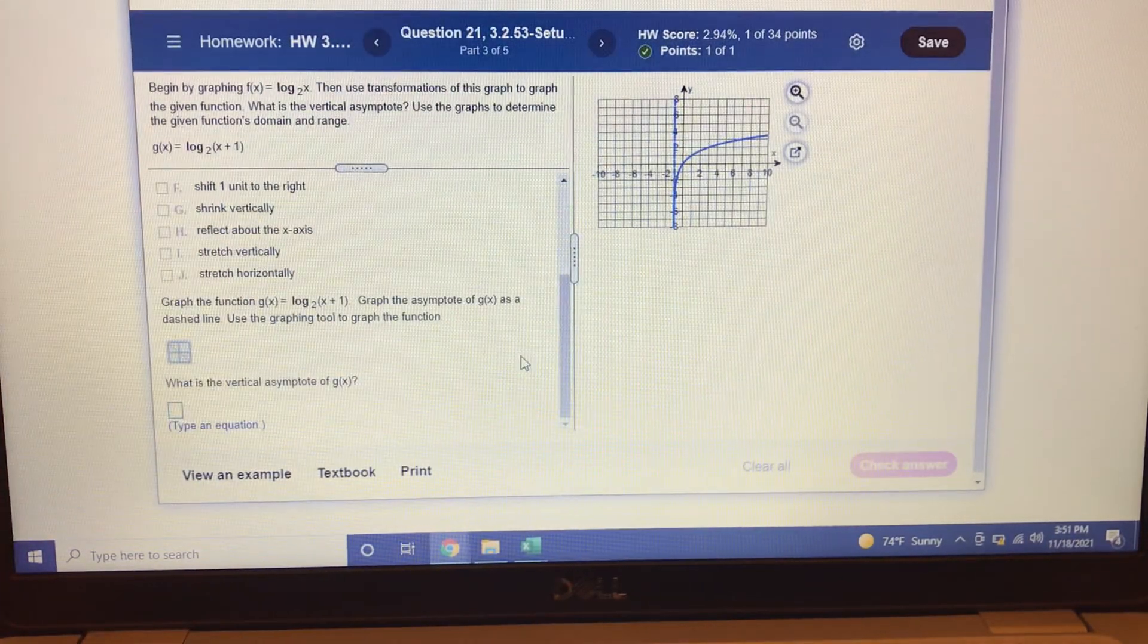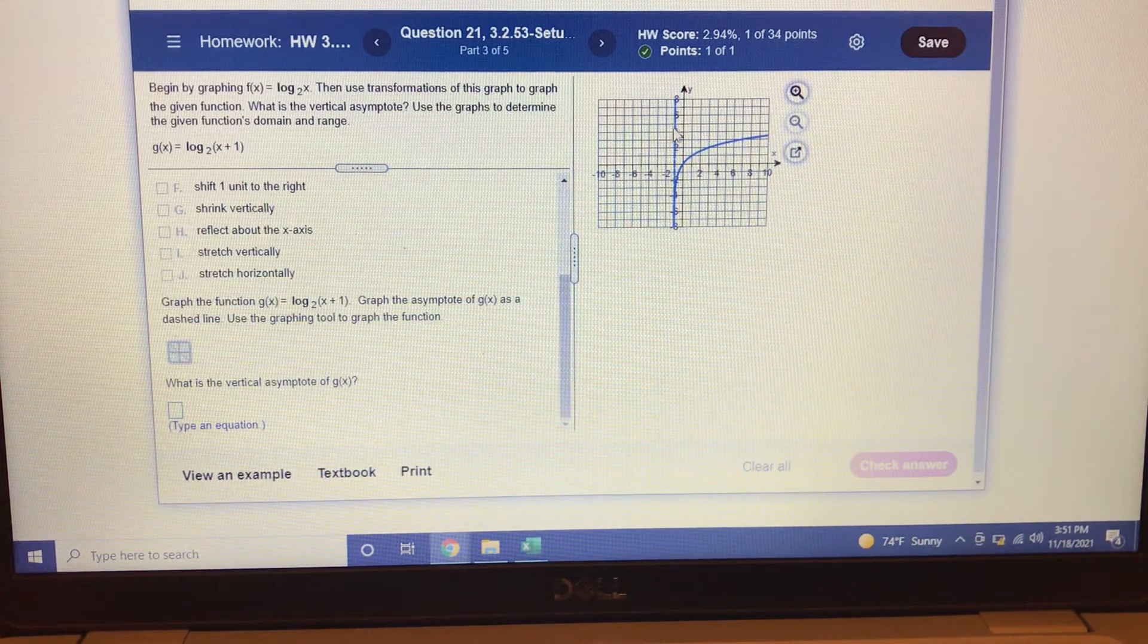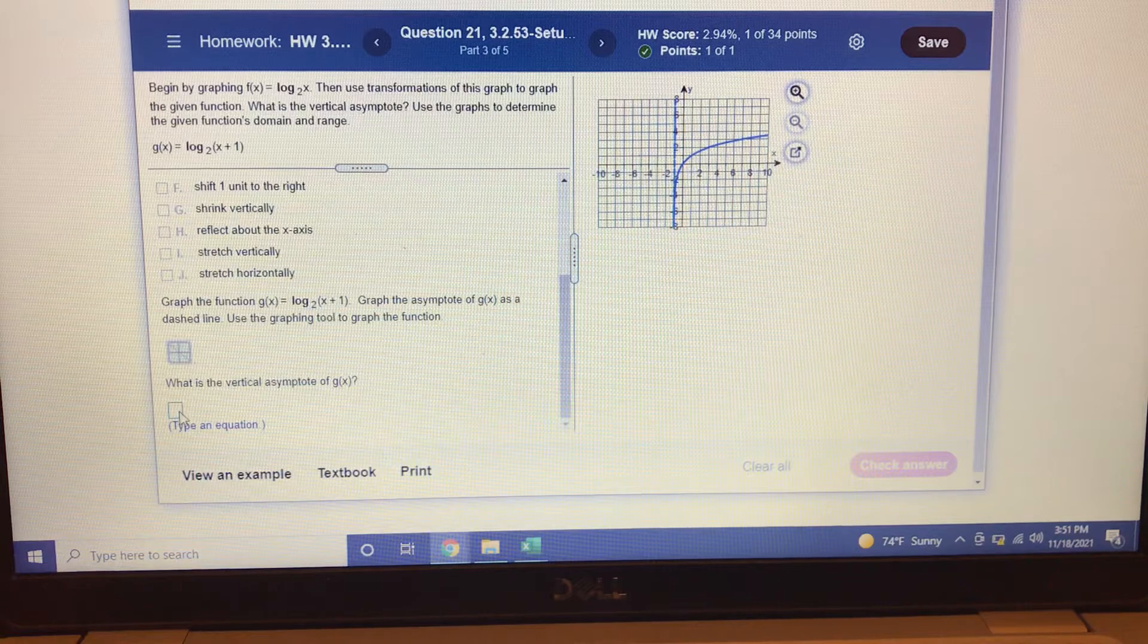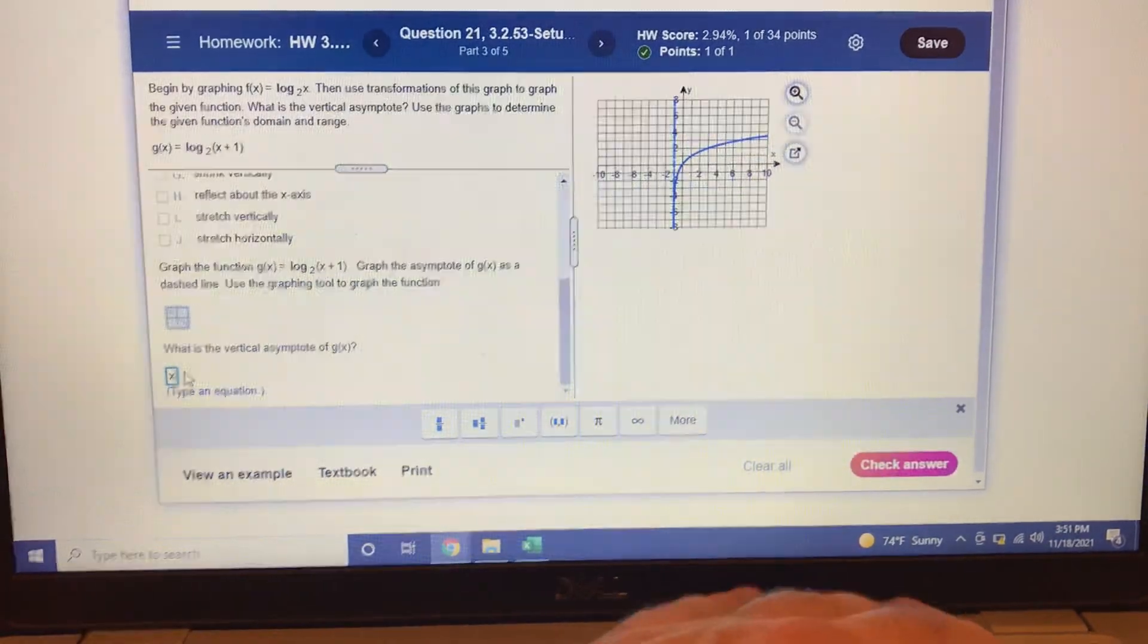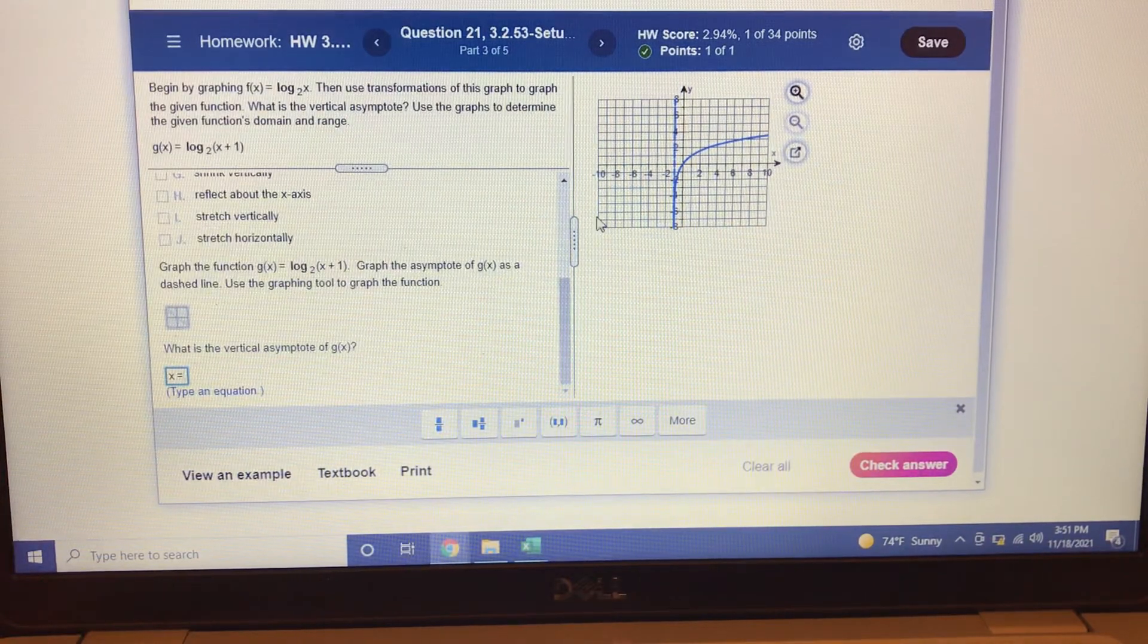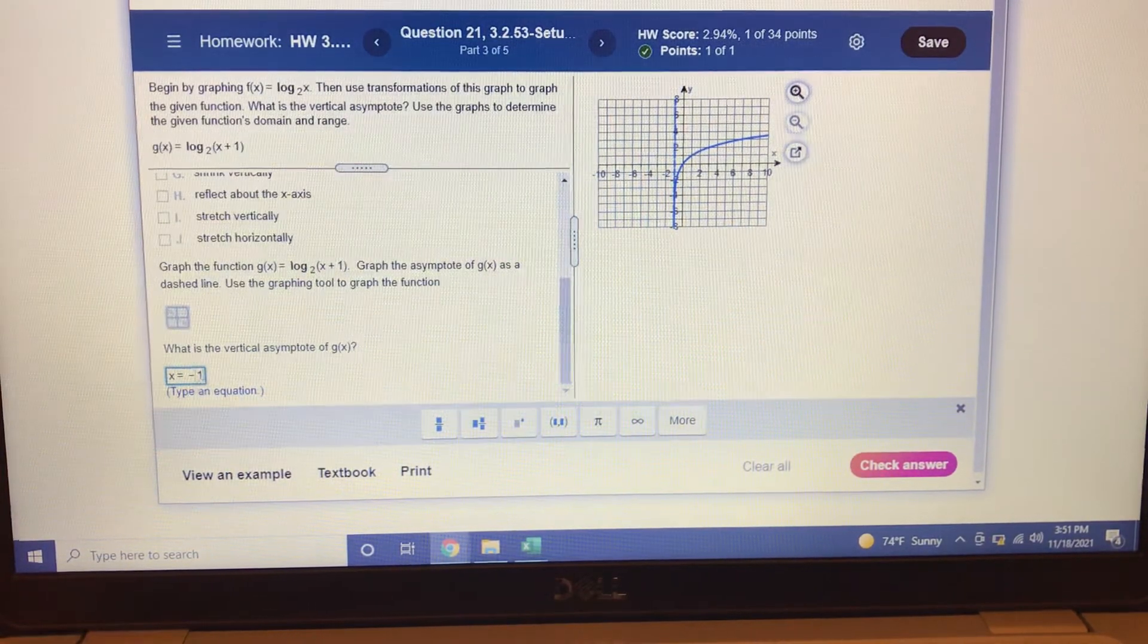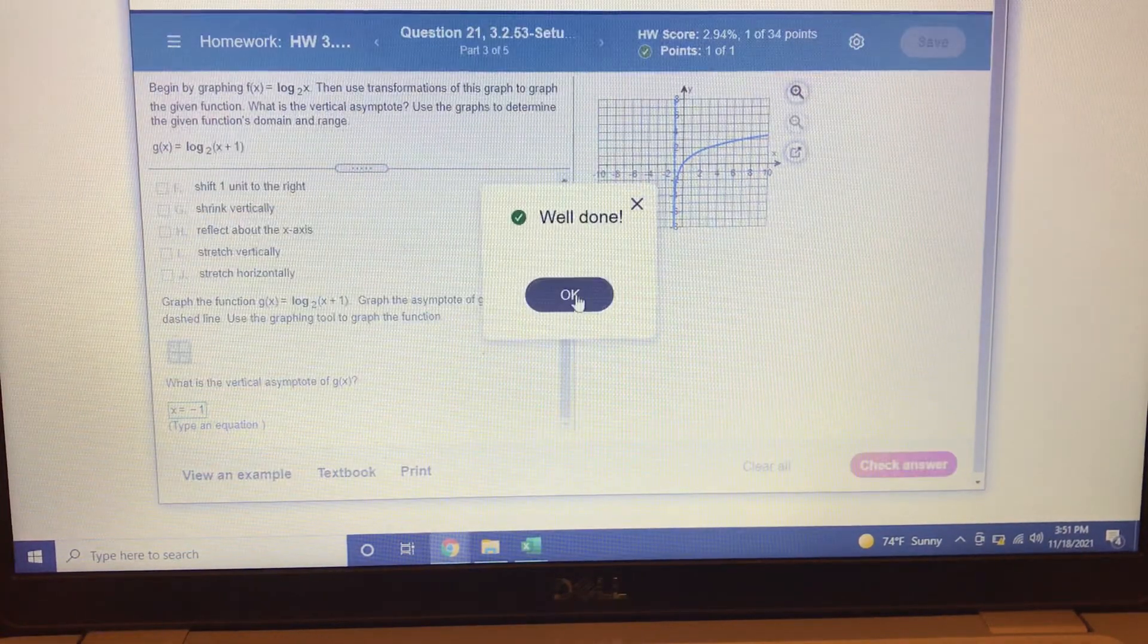Alright. They asked us a few more questions here. What is the vertical asymptote? Well, it's right here. And it's going to be an x equals. Vertical lines are x equals. Horizontal lines are y equals. And x, no matter where your y is, x is always negative 1. So x equals negative 1. Check our answer. Well done.